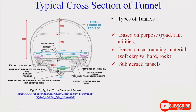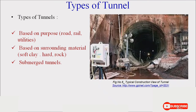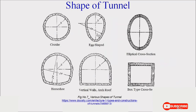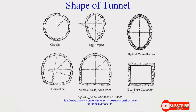Based on purpose: road and railway utilities. Based on surrounding materials: whatever material is present at the site. Submerged tunnels are mostly used in underground situations. Tunnels are also constructed in different shapes: circular, egg-shaped, elliptical cross section, horseshoe, vertical wall, and box type cross section. According to the purpose and condition of the site, we decide the shape of the tunnel.